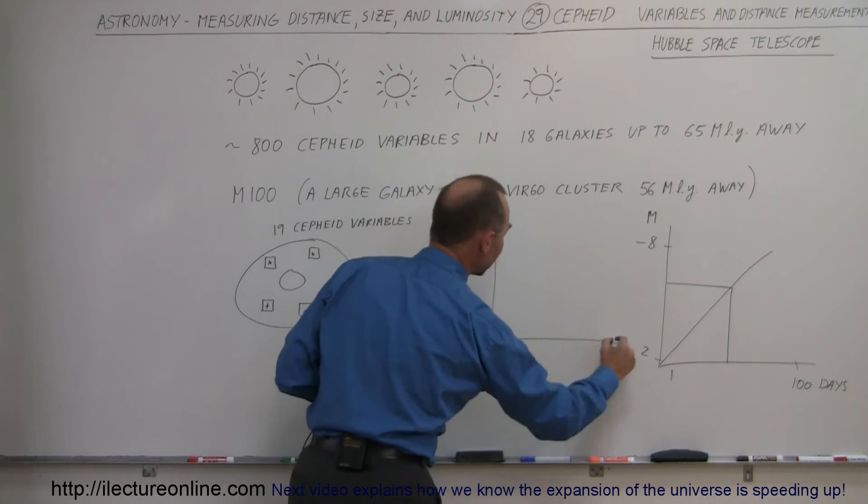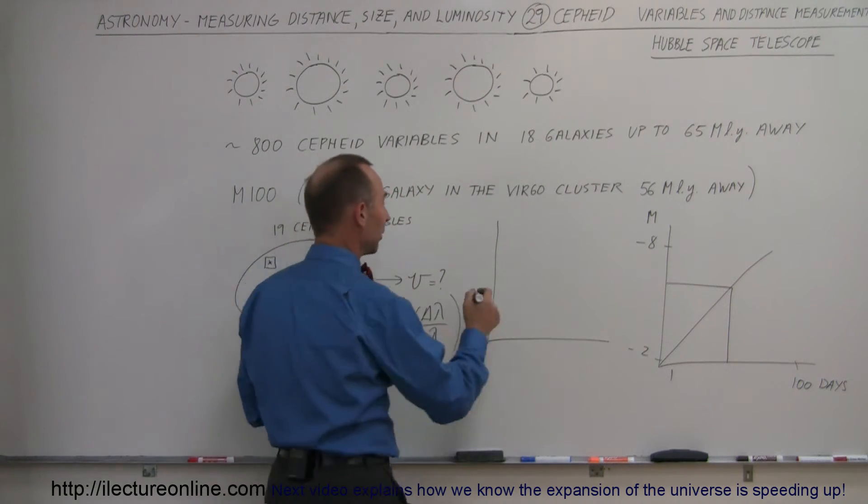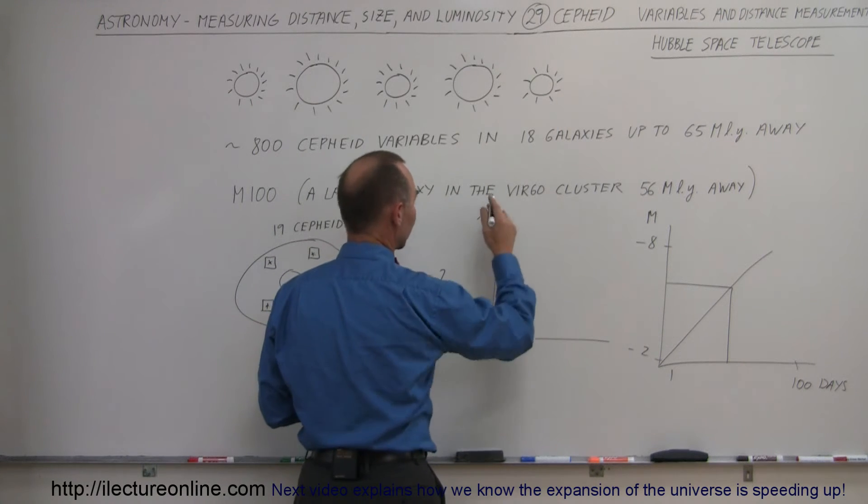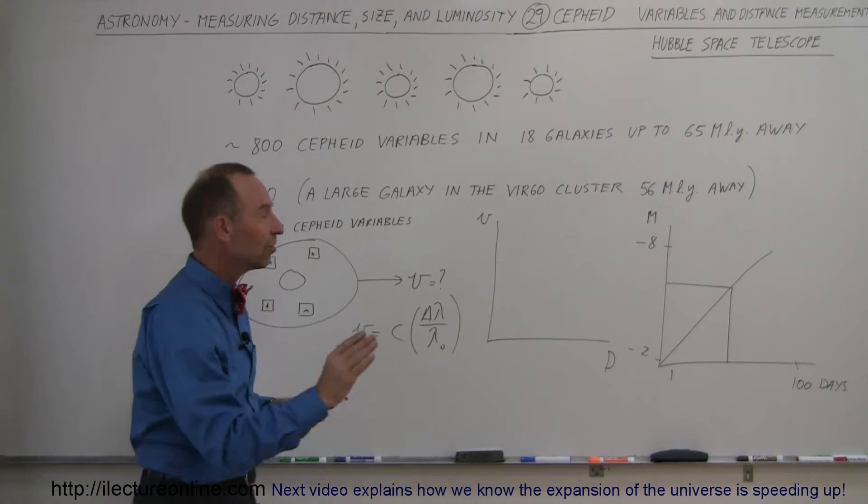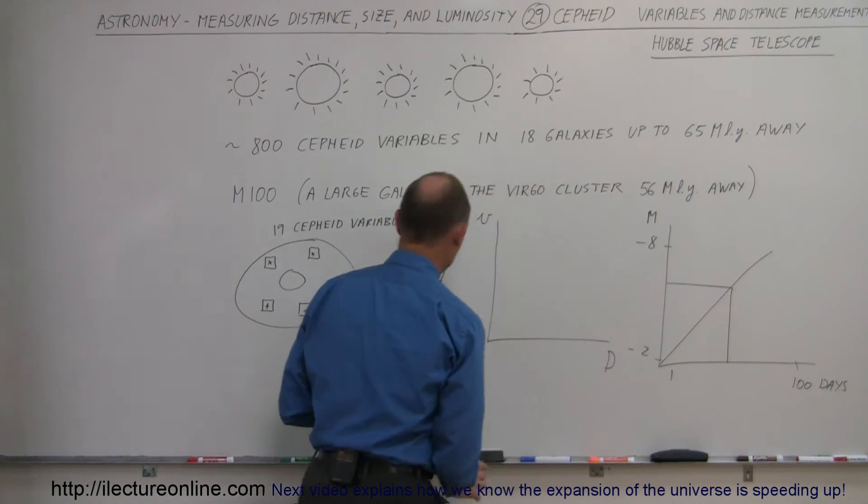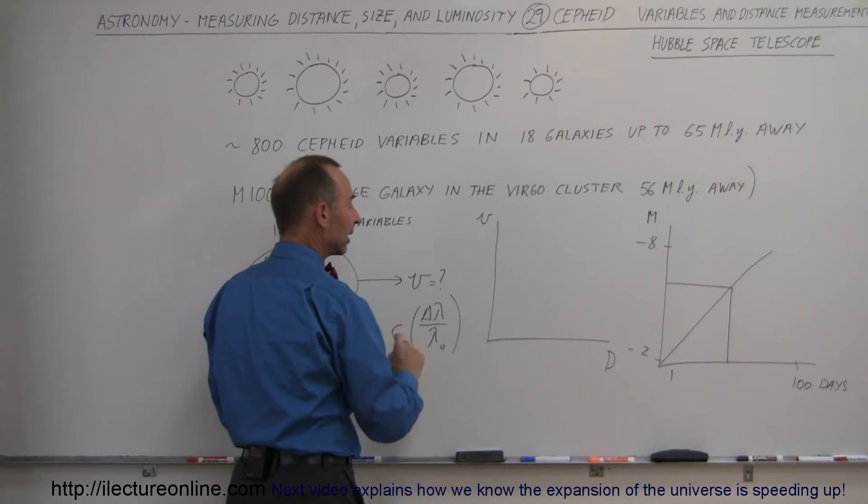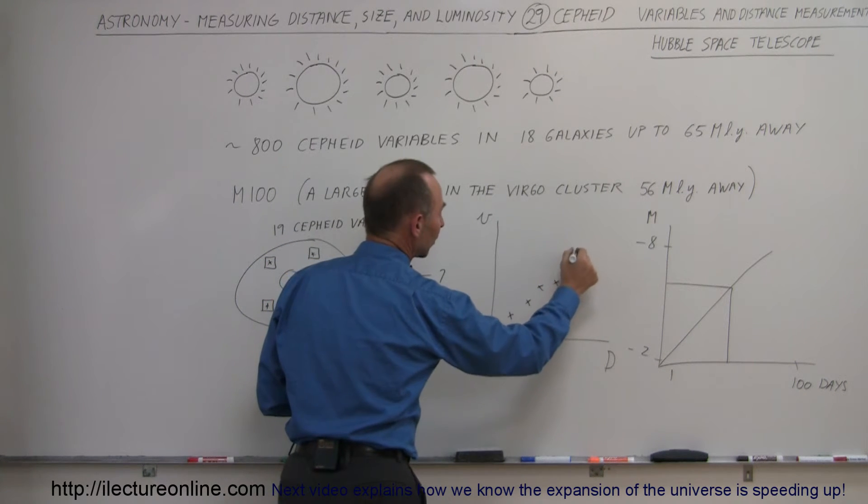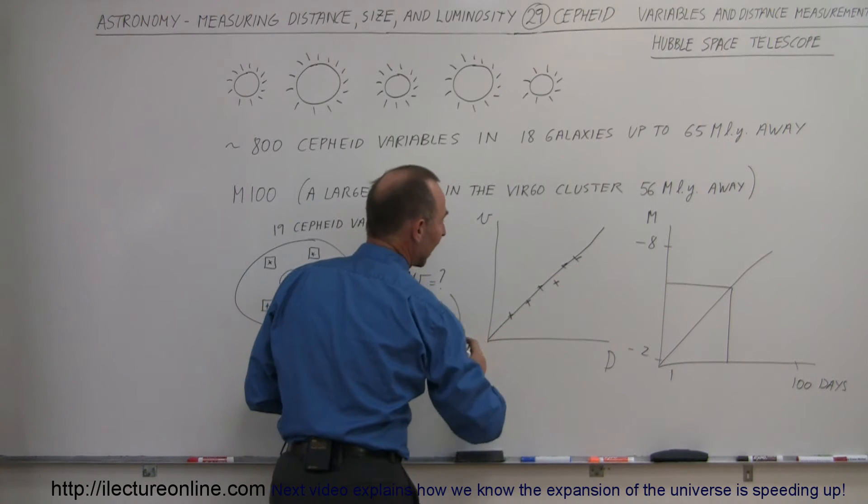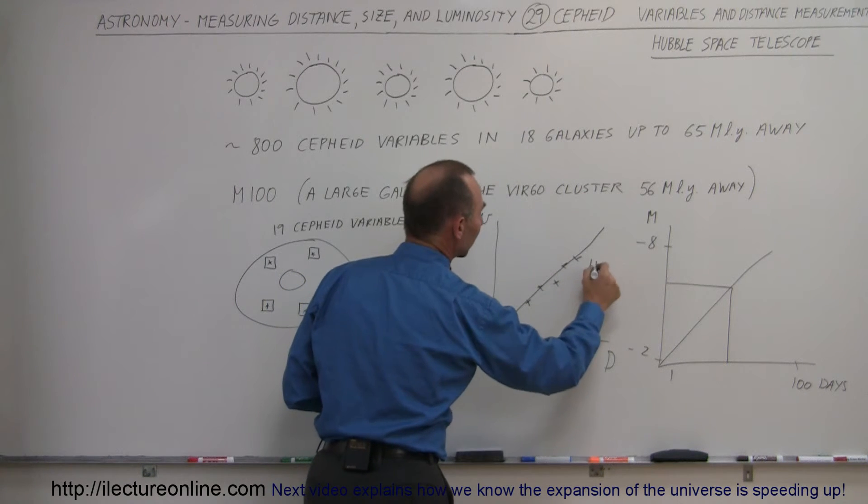We then put that on the Hubble curve. For example, we have the velocity on the vertical axis and the distance on the horizontal axis. We use the distance from the Cepheid variables and the recessional velocity from our calculations, put on these different values, connect them all like that, and now we have a nice slope that represents the Hubble constant.